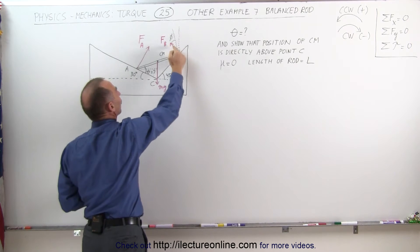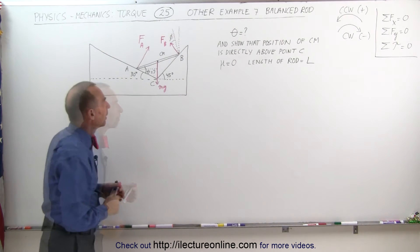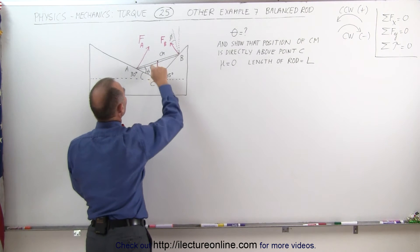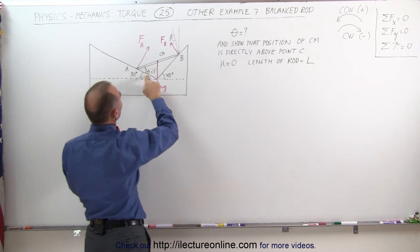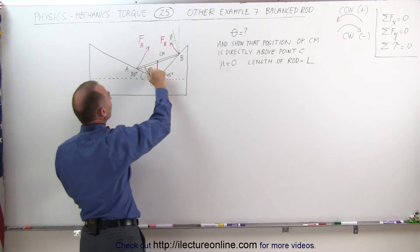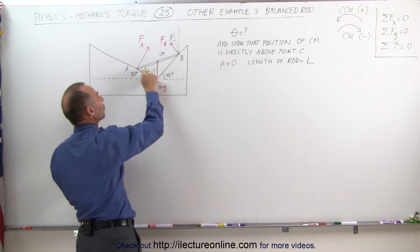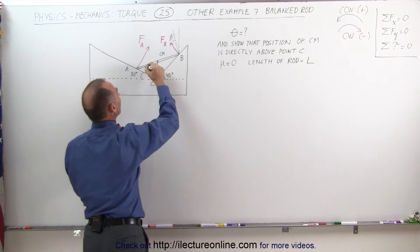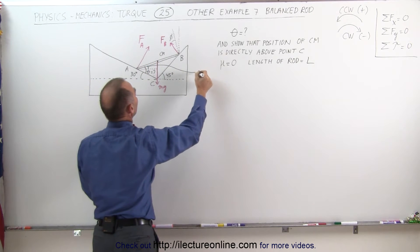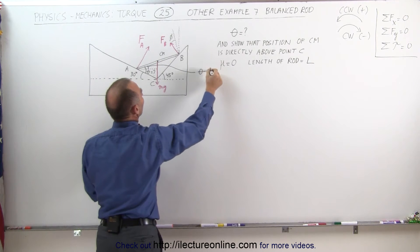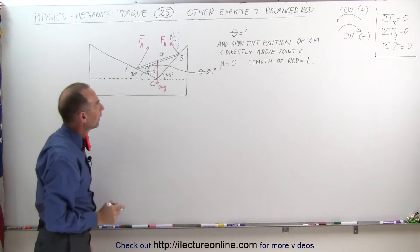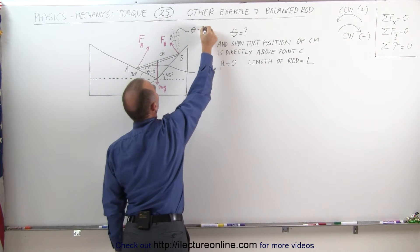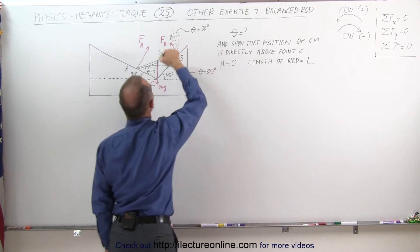The angle between the rod and force B is equal to phi. The angle between the rod and the horizontal is equal to theta minus 30 degrees. This angle is the alternate interior angle from the 30-degree angle, so theta minus 30 gives this difference. This angle in here is also theta minus 30 degrees, because it must equal the angle on the other side.